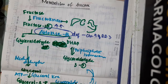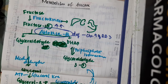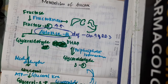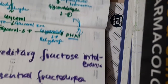For confirmation of diagnosis of hereditary fructose intolerance, you should demonstrate the deficiency of aldolase B in a liver biopsy. Treatment is to advise the patient to take a fructose-free diet.